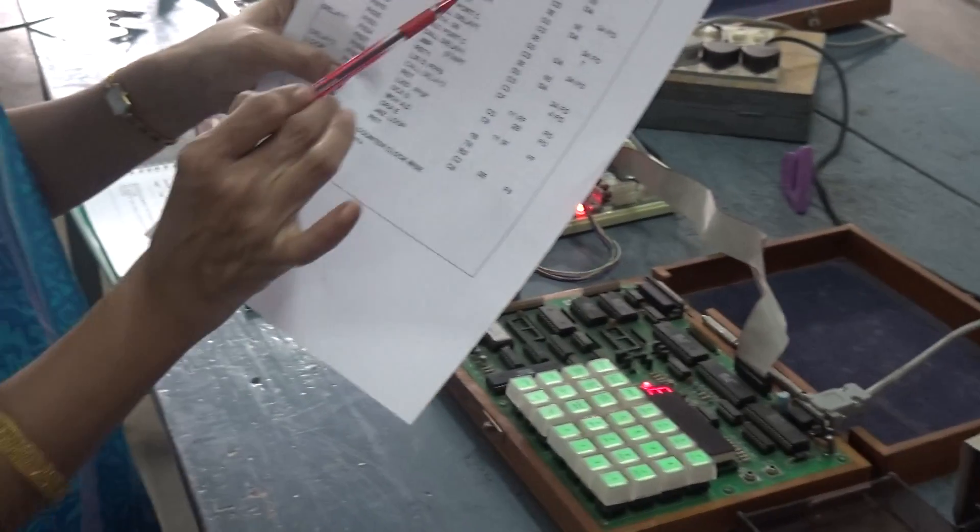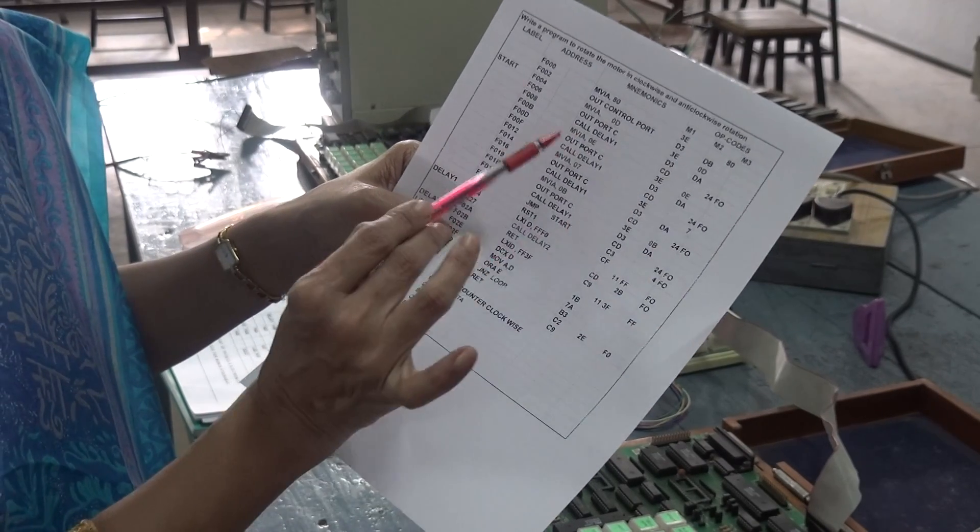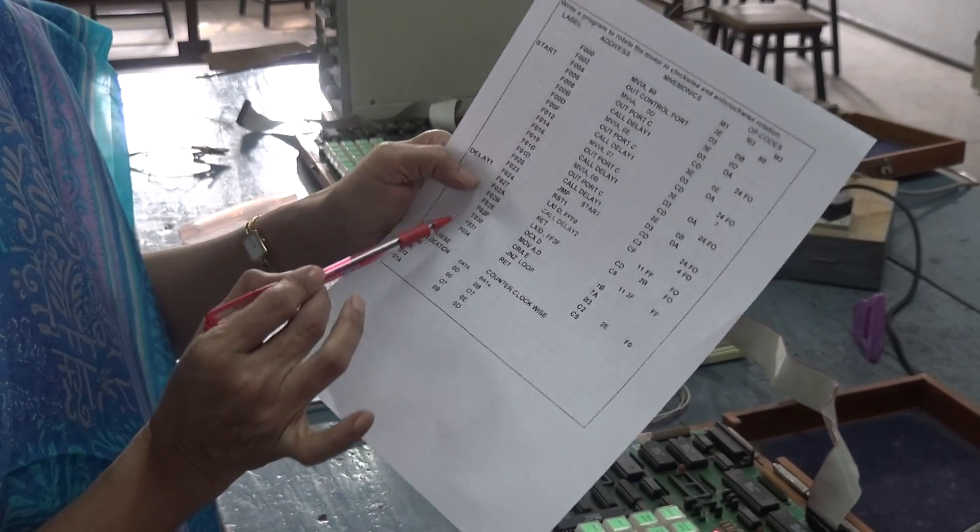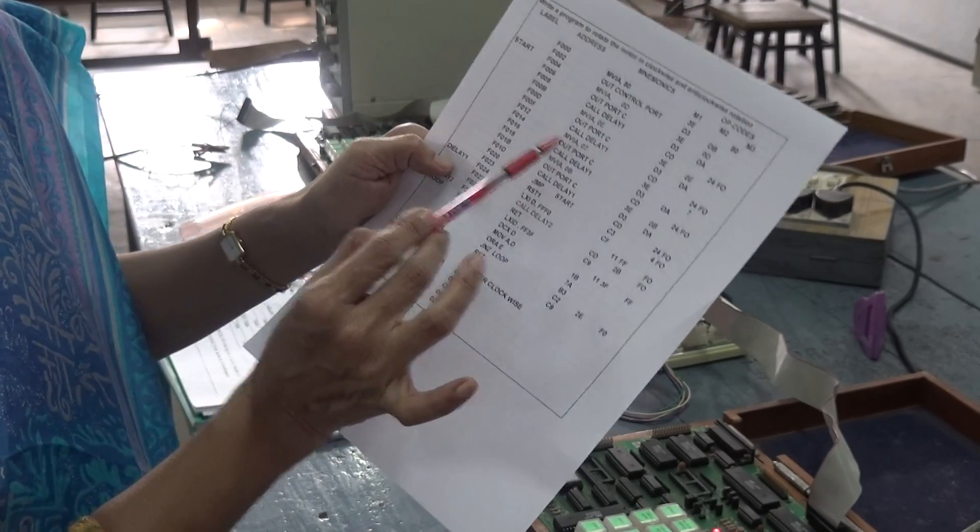So, send the first data to port C. And you want it to be available on the port for certain amount of delay. So, the delay is written as a subroutine here. And we are calling it as a delay 1. Then, second data.